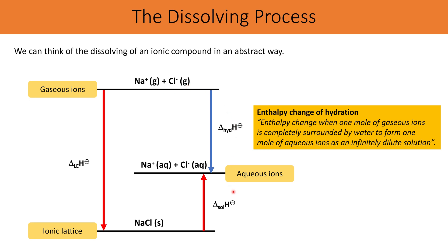It's important to note that the enthalpy change of solution may be either endothermic or exothermic. In the sodium chloride example it's endothermic, so energy is absorbed and the solution cools. However if it were exothermic, the arrow would point downward — the aqueous ions would be below the solid ionic compound — and energy would be released, so the temperature of the solution would increase.